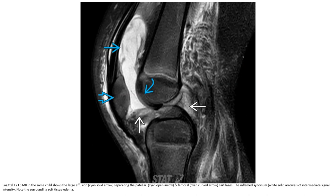This is a T2-weighted MRI in the same patient. There is a large effusion separating the patellar and femoral cartilage. The inflamed synovium is of intermediate signal intensity. Note the surrounding soft tissue edema.